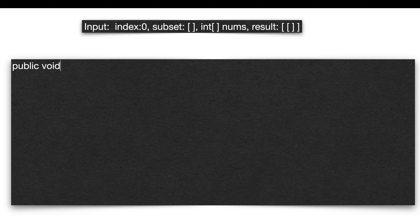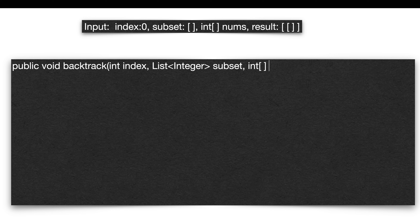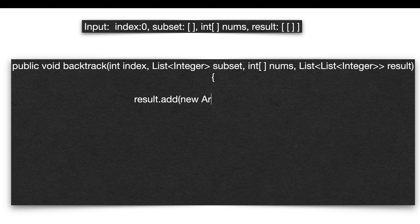For n elements, we make 2^n recursive calls. On every recursive call, we frame a subset. It is very important that we clone the subset and then add the cloned subset to the result on every recursive call.